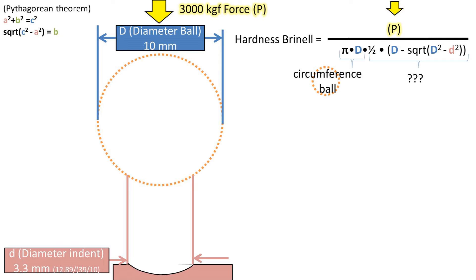times one half the diameter of the ball minus the square root of the diameter of the ball squared minus the diameter of the indent squared.